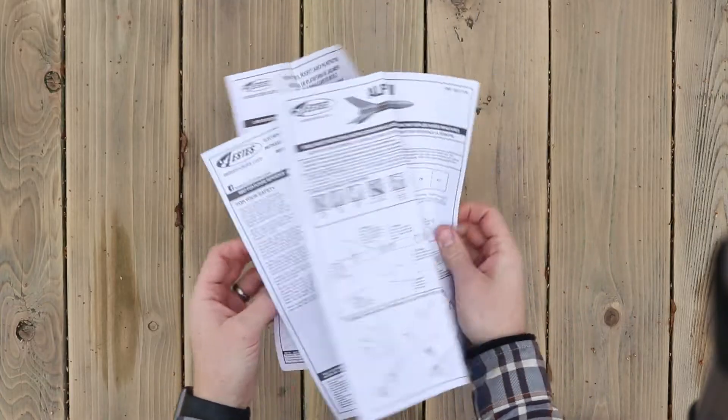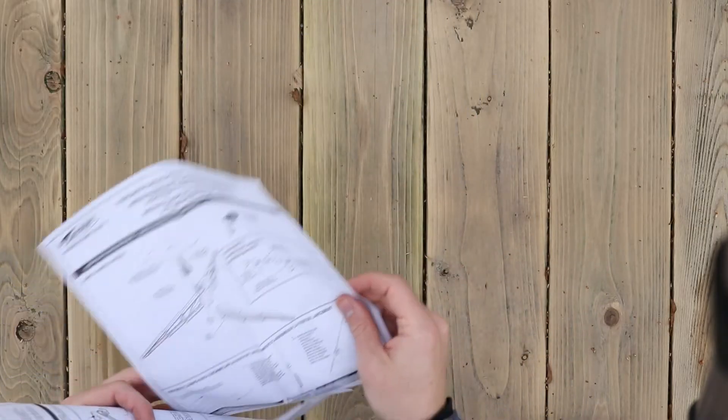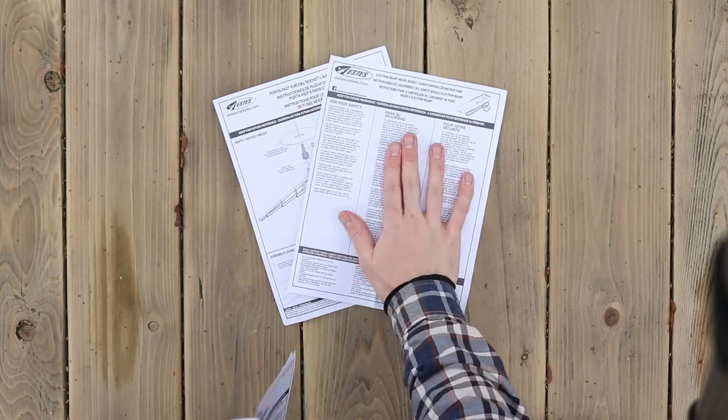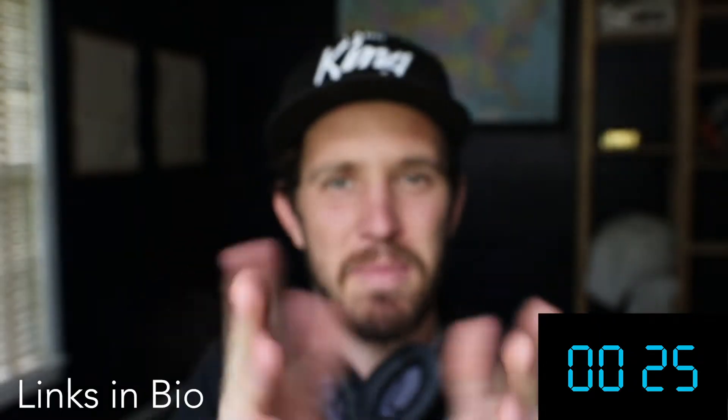Let's grab our instructions. As you'll see, there are three pages - one for the stand, one for the controller, and one for the rocket.